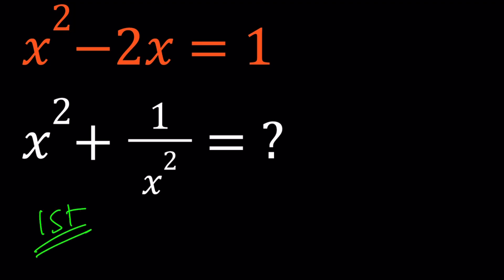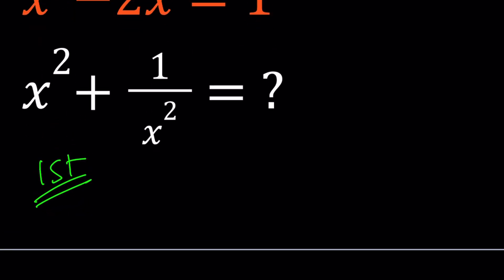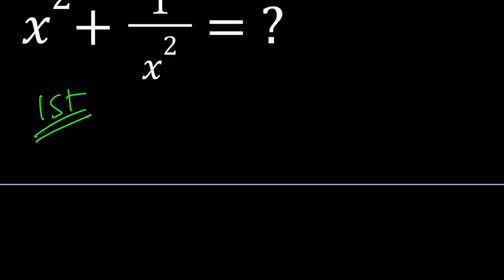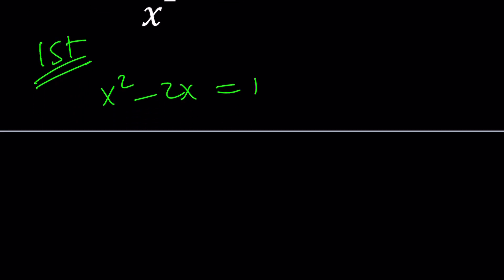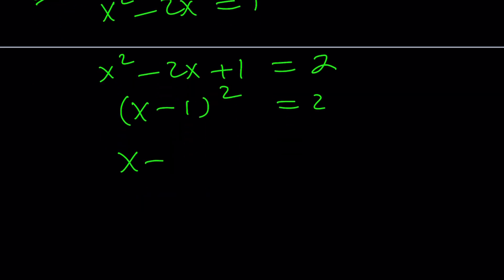For my first method, and I'm pretty sure there's a third way to do this, we have x squared minus 2x equals 1. I'd like to complete the square. Let's add one to both sides. That gives us a perfect square.